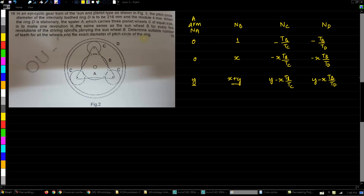Namaste everyone. This problem will seem almost the same as the previous ones we solved. We can use the same table we created for those, with slight changes in the names of the gears and arm. Here the arm is called A — in fact it's termed a 'spider' because it carries three gears at three points. We can also call it an arm. We start with the arm, then the Sun, the planet, and the annular ring.